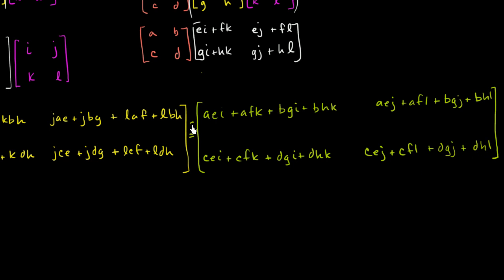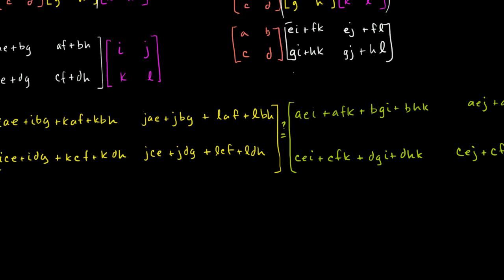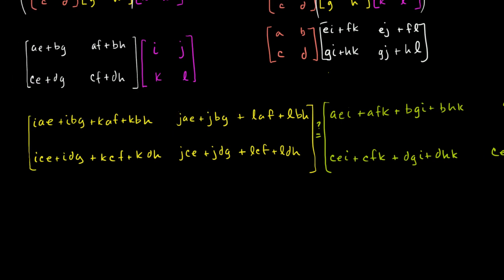Now are these two things equivalent? Well let's look entry by entry. So IAE, this is equivalent to AEI, because we know scalar multiplication is commutative. Now IBJ, or IBG. IBG, you see it there, and you see it there. KAF, you see it there, and this is the same thing as AFK. And then KBH, this is the same thing as BHK. And you could go entry by entry. Actually let's just do that. I'll do that really fast.